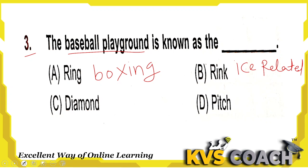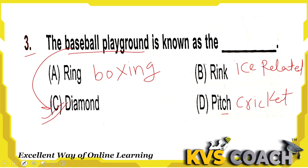Diamond is the playground of baseball, so option C is the right answer here. Option D is pitch — pitch is used for cricket and outdoor games mainly. The right answer for our question is option C, diamond.